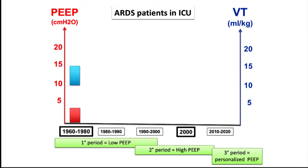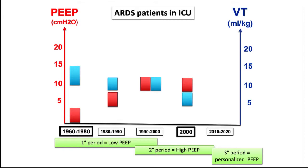That means open the lung, keep it open, and avoid derecruitment — as clearly stated by Mathieu and also evoked by Liz. On this slide, this is a simple history about what we learned during the last 50 years in ARDS. In the red line you have the PEEP value, and in the blue line you have the tidal volume. Tidal volume was coming from more than 15 mL/kg more than 30 or 40 years ago.